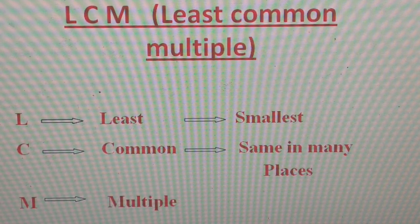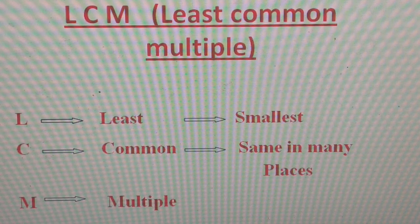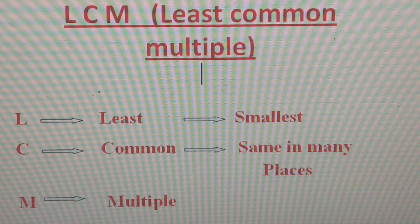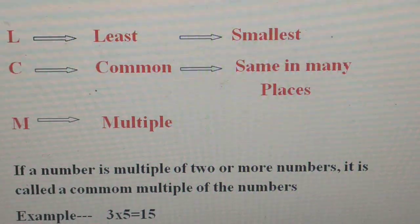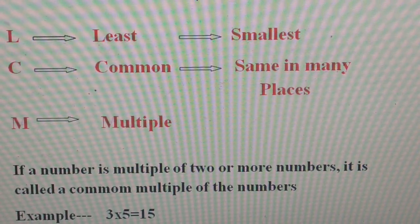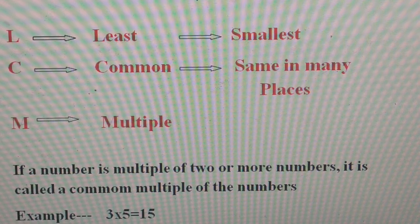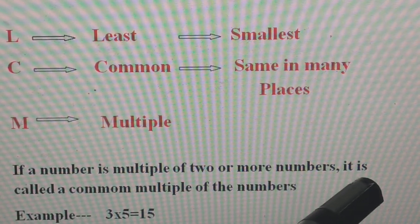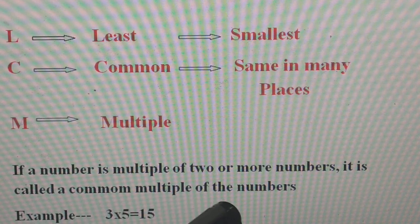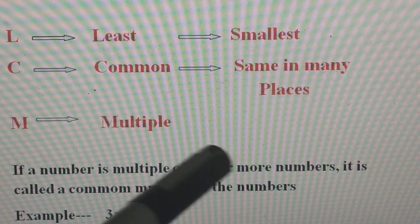M stands for Multiple. Multiples we have done in the previous chapter, and in simple words, multiple comes from the table. Coming to the common multiple: if a number is a multiple of 2 or more numbers, it is called a common multiple of those numbers.